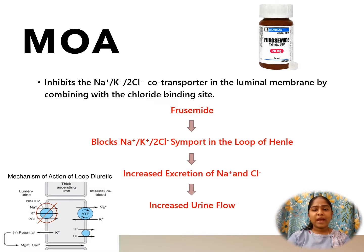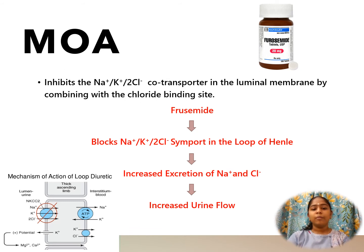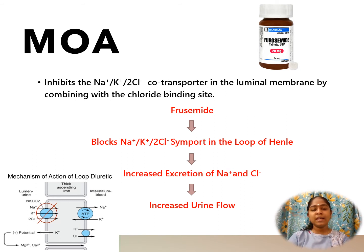Mechanism of action of furosemide: Furosemide inhibits the sodium-potassium-chloride co-transporter, or symport, in the luminal membrane by combining with the chloride binding site. Furosemide blocks the sodium-potassium-chloride symport in the loop of Henle, resulting in increased excretion of sodium and chloride, causing increased urine flow.